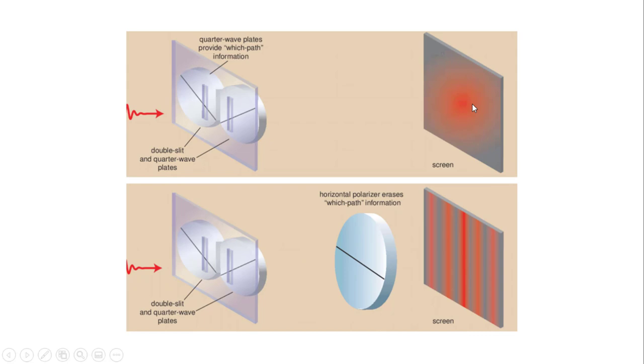But if we send it through the which-way detector, the which-path detector essentially, and then we erase that information by adding a polarizer which gets rid of that which-path information...